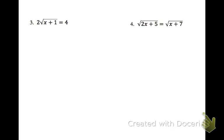Again, I need to get the radical alone on number 3. So I'm going to start by dividing both sides by 2. And now I just square both sides to get rid of the radical. Subtract the 1 over, I get x equals 3.